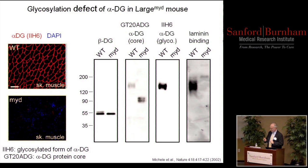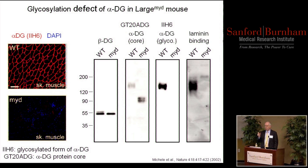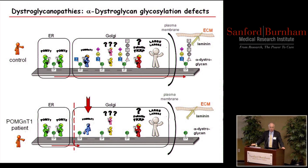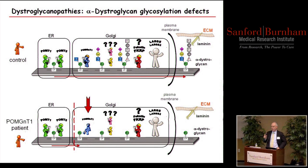A mouse model was discovered with another one of these genes — a particular gene called LARGE. Staining with antibody 2H6 is completely deficient, the same ~60 kilodalton shift in molecular weight, the protein is present but there's no 2H6 staining and no high affinity laminin binding. This overlay assay works quite nicely because dystroglycan binds laminin through the glycan, not through protein interactions.